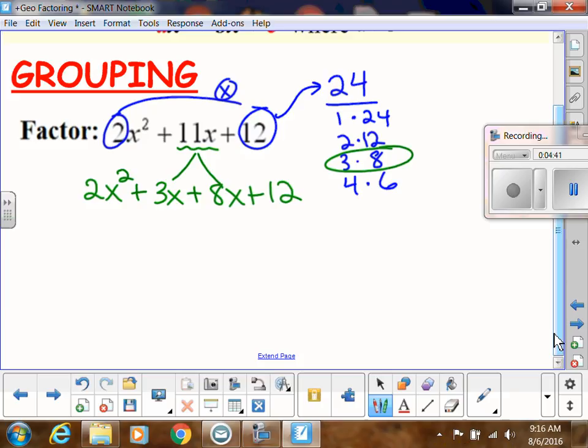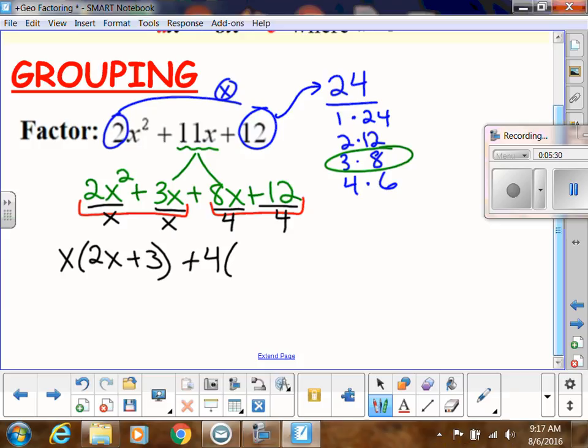So now what we're going to do is we're going to group. This is why this is called grouping, because we're splitting this problem up into two different groups. I'm splitting this up into this group and this group. I'm going to do my greatest common factor. When I'm doing my greatest common factor, I'm going to say what's in this first group? What can I factor out? I can only divide both of these by x. So x comes in front, and then I'm left with 2x plus 3. I'm going to do the same thing in the second group. My greatest common factor looks like 4. So I'm going to have a plus 4 in the front, and then when I divide, I'm going to get 2x plus 3.